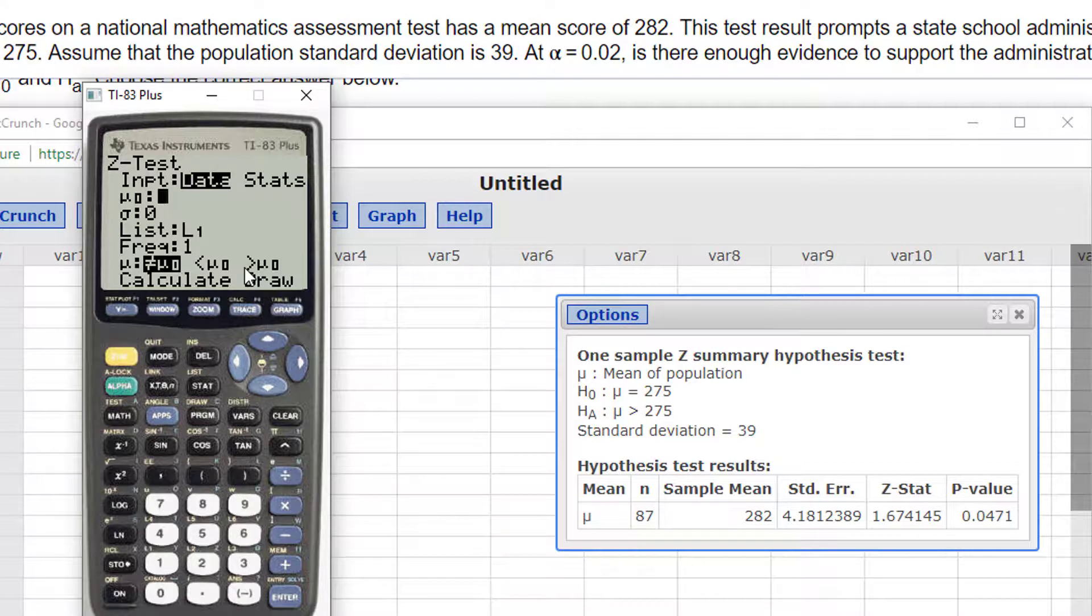Mu naught, the null mean, which was 275. The standard deviation, which was 39. Oh, sorry. Go to Stats. Go back up here. I don't have data. This is Stats. So, 275, 39.